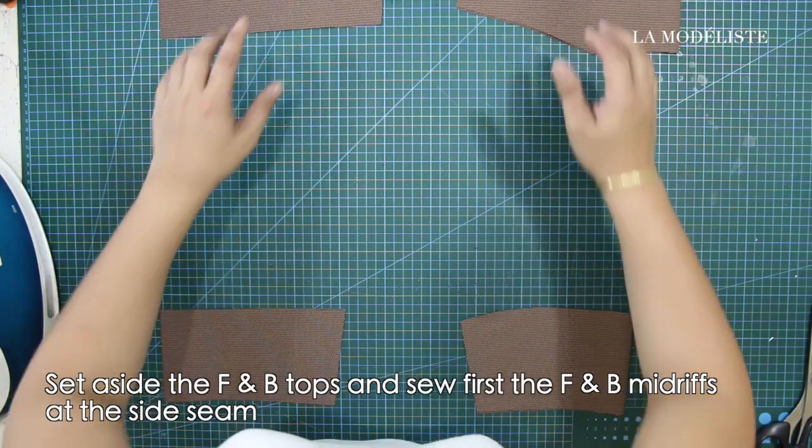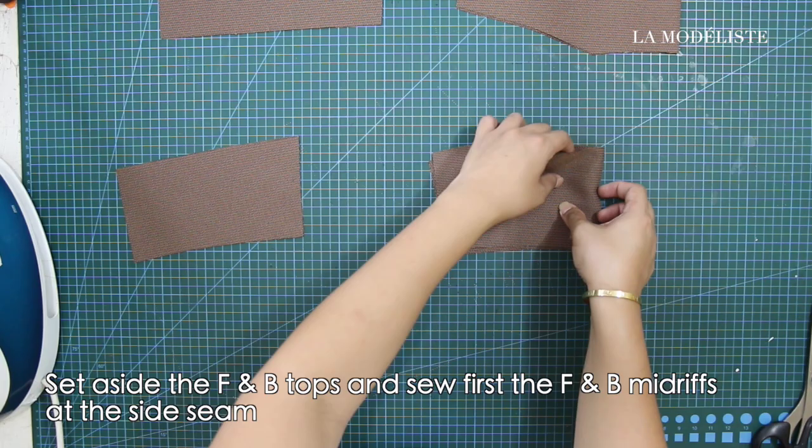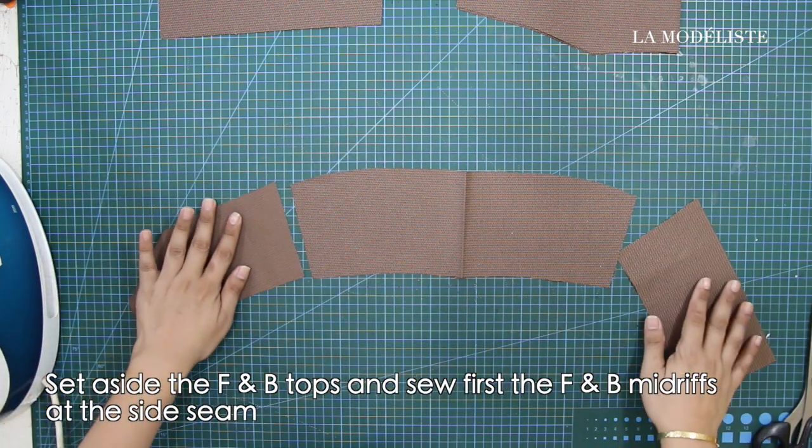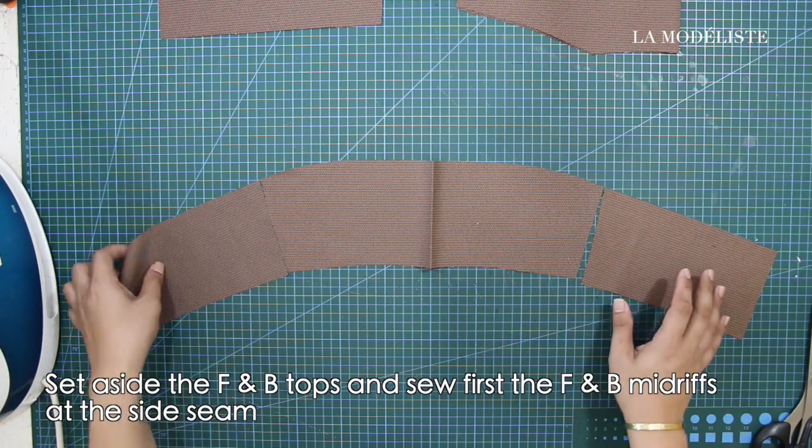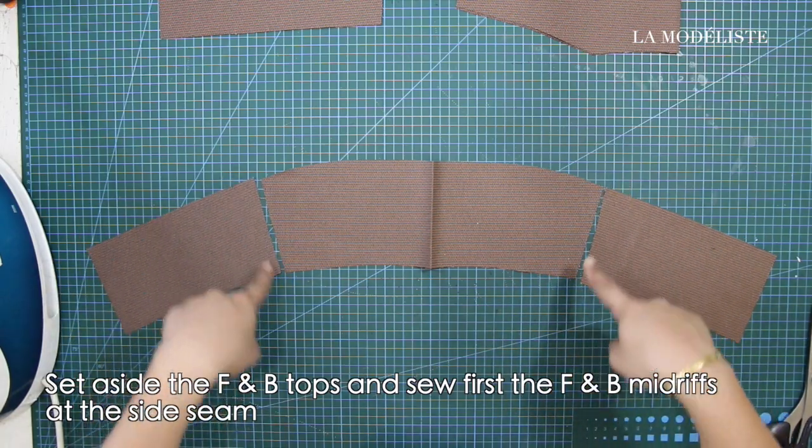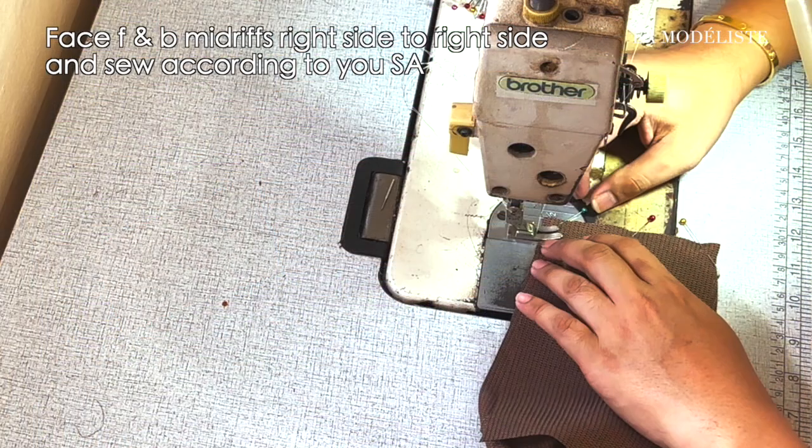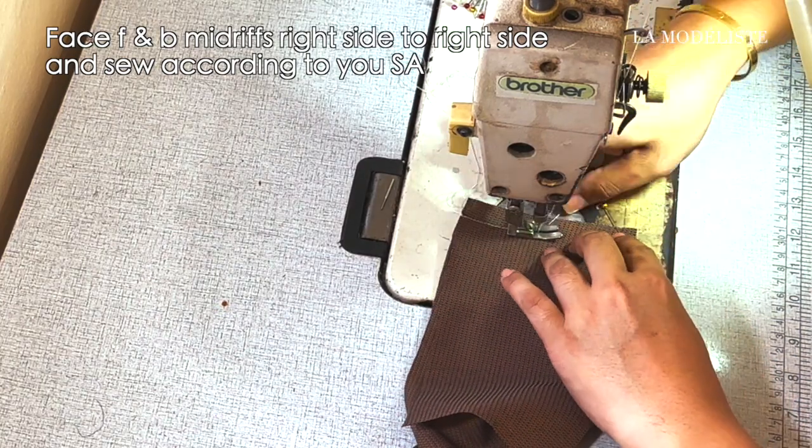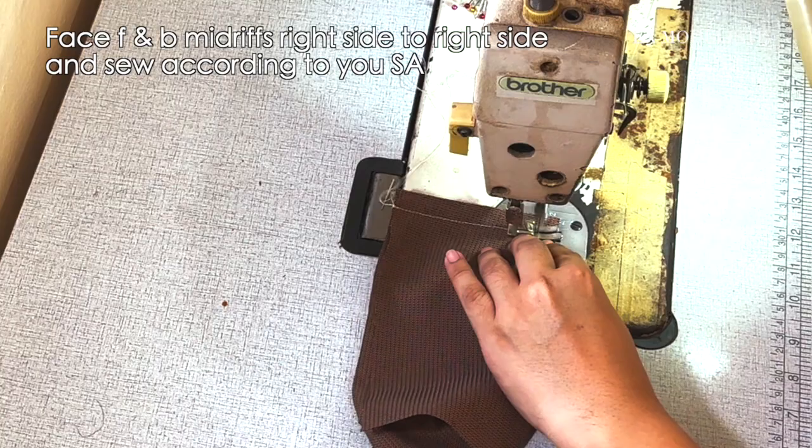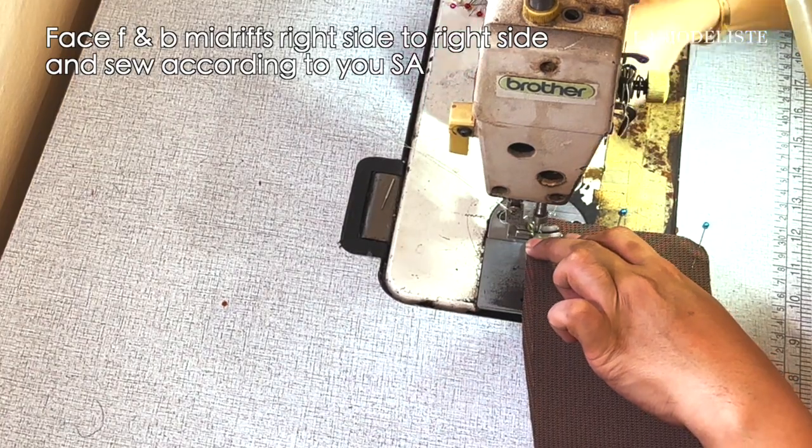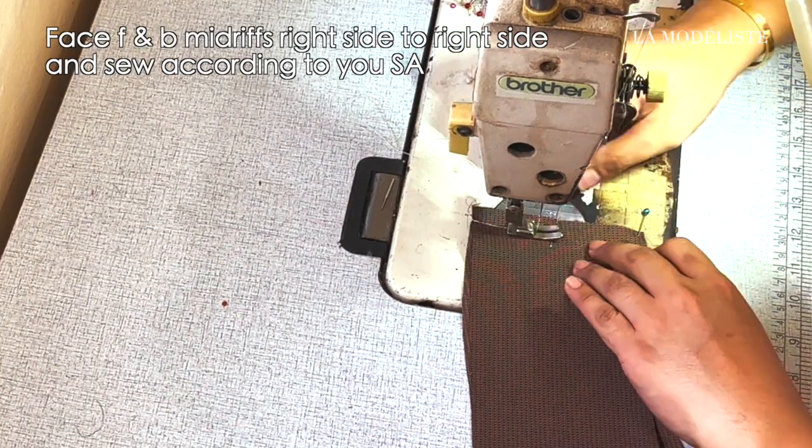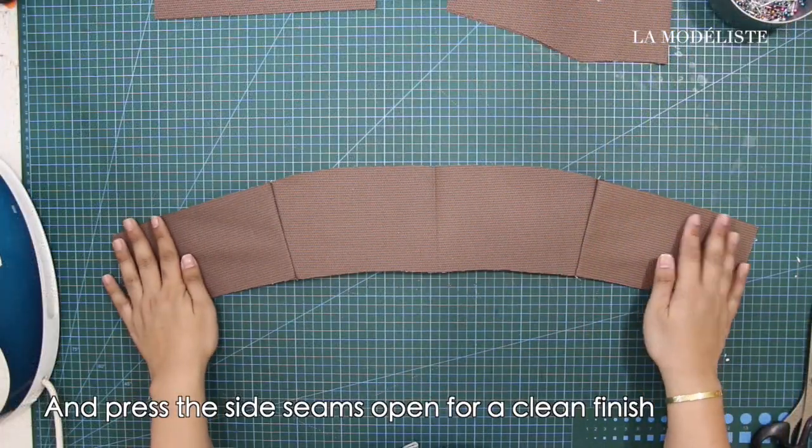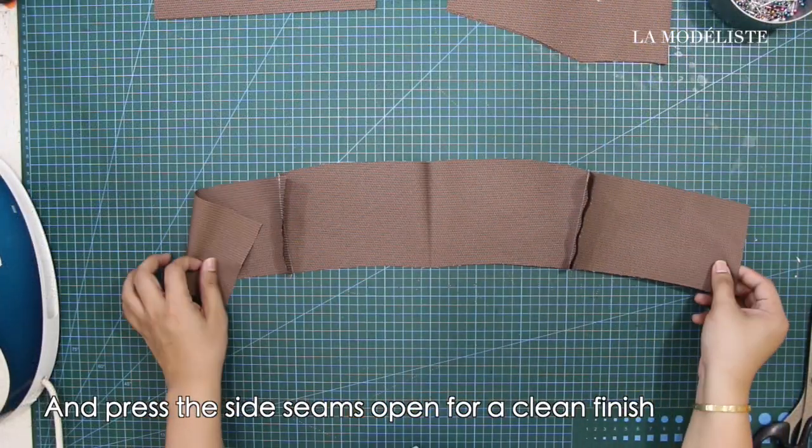Set aside the front and back tops and sew first the front and back midriffs at the side seam. Face front and back midriffs right side to right side and sew according to your sewing allowance. And press the side seams open for a clean finish.